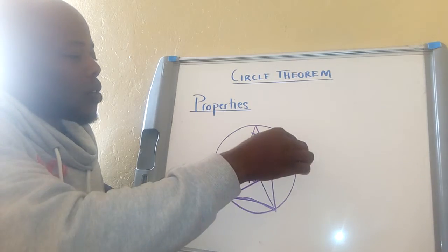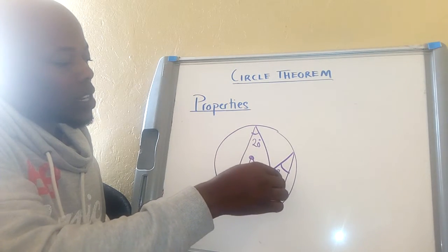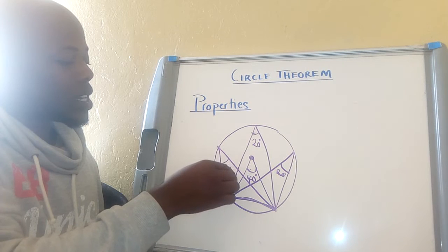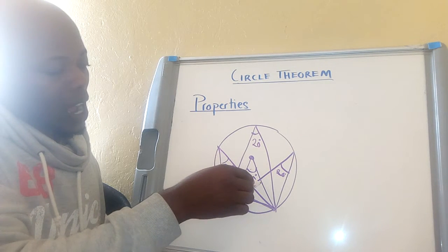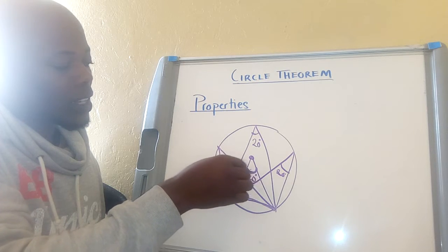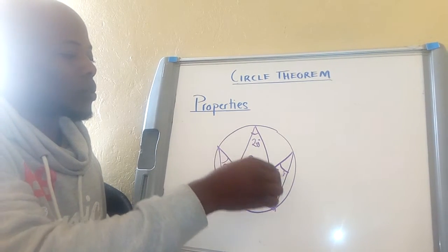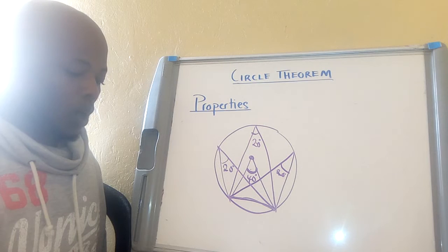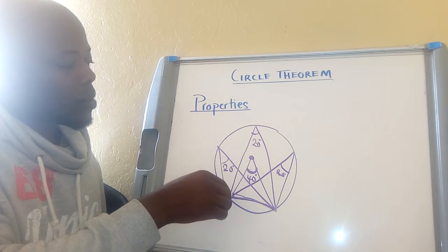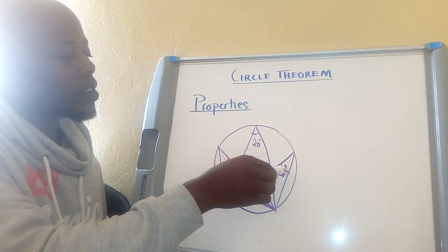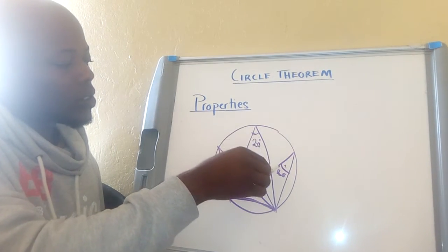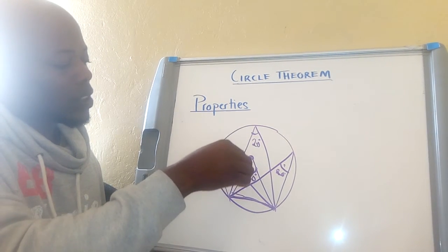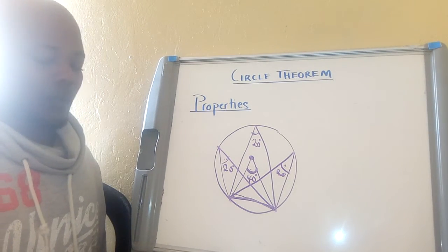This angle will also be 20 degrees because it's coming from the same segment, and this other one will also be 20 degrees. The only angle which is twice is the one at the center. You can see this connects to property one: angles coming from the same segment are equal, and the angle at the center is twice those angles at the circumference.